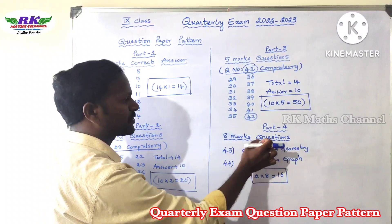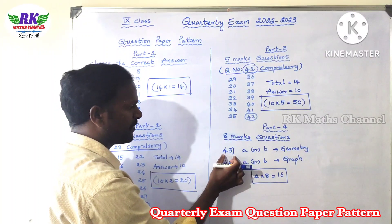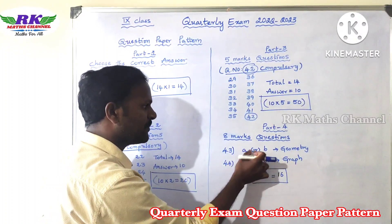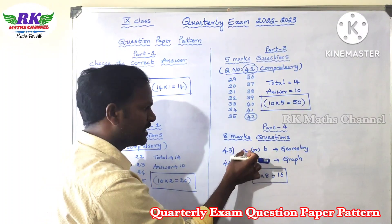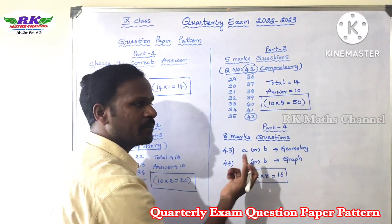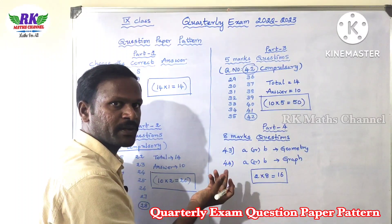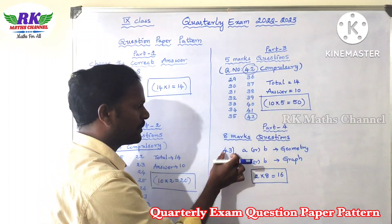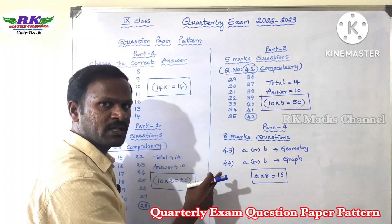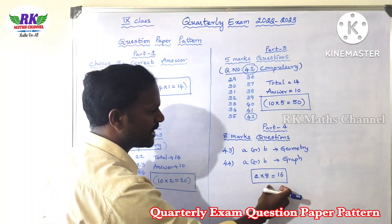Next, Part 4 — we have 8 mark questions. These are geometry and graph. Question number 43 and 44: each question has two parts, an 'a' question and a 'b' question, and you have a choice between a or b. Question 43 is geometry or graph, and question 44 is geometry or graph. So there are two questions, each 8 marks, and two eights are 16 marks. Part 4 total is 16 marks.